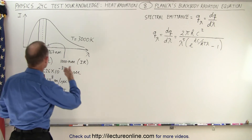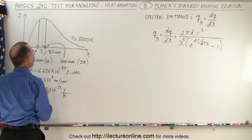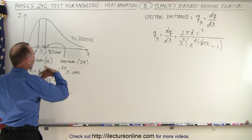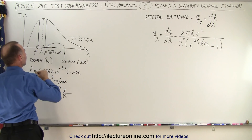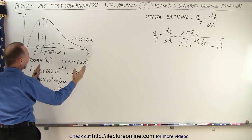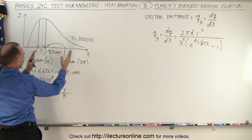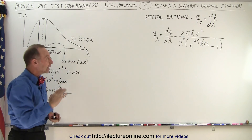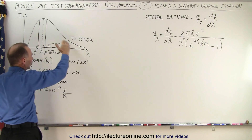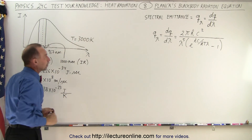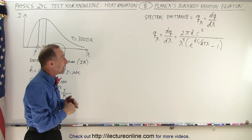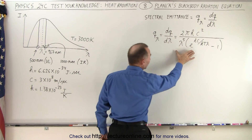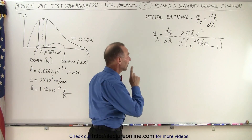Most of us are now familiar with the black body curve, and we know that depending upon the temperature, the intensity will go up at higher temperatures, and the peak of the curve will go to the left with higher temperatures as well. The equation that describes this curve is known as Planck's black body radiation equation.